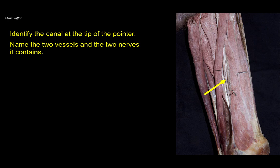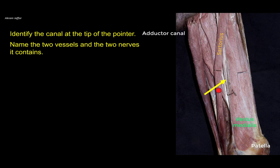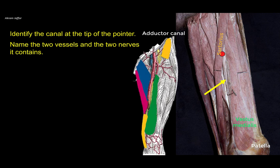Identify the canal at the tip of the pointer and name the two vessels and two nerves it contains. This is the thigh; you can see the sartorius muscle, which has been pushed posteriorly, the quadriceps femoris, and the vastus medialis, which is fleshy down to the knee. The sartorius has been pushed to reveal the canal underneath it, called the subsartorial canal or adductor canal. This canal is bounded laterally by vastus medialis, floored posteriorly by adductor longus and adductor magnus, and roofed by the sartorius muscle.